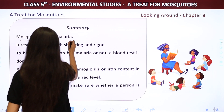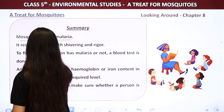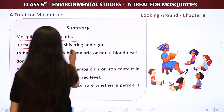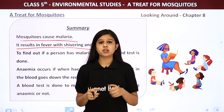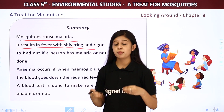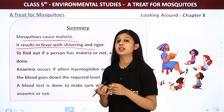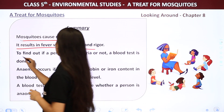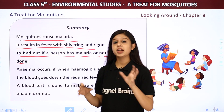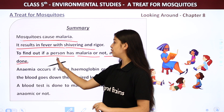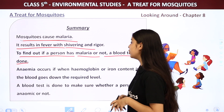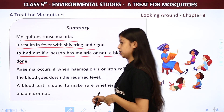Mosquitoes cause malaria. It results in fever with shivering — first there is shivering, then fever comes. To confirm that a person has malaria or not, a blood test is done.